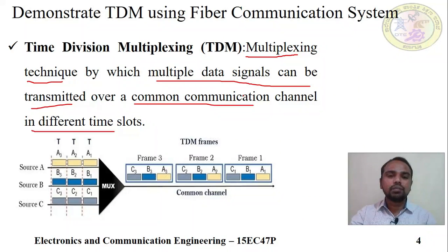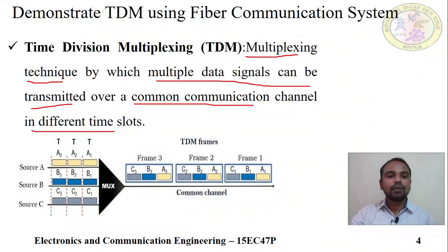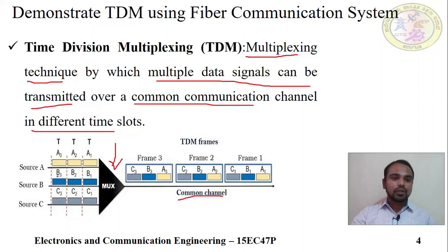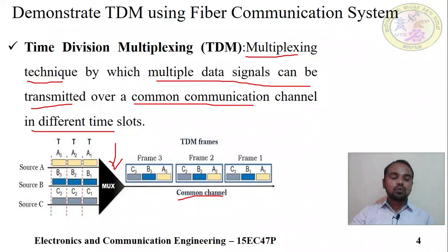This is an example of TDM. We have only one common channel. Here, this is the multiplexer. We have three sources of information: source A, source B, and source C. Source A, source B, and source C produce the output going into the multiplexer.